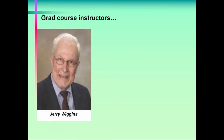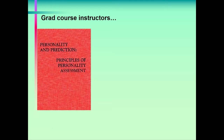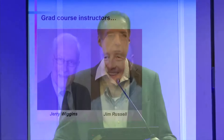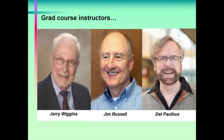I want to acknowledge some key intellectual influences and collaborators over the years. I went to graduate school at the University of British Columbia, where I was fortunate to have key figures in the personality assessment and research area, especially Jerry Wiggins. He wrote a very influential book published in 1973 called Personality and Prediction — if you haven't read it, I'd really encourage you to. Wiggins was influenced by Timothy Leary's 1957 book The Interpersonal Diagnosis of Personality. Some of you may know Leary as a guru of the 60s, but he was actually a very accomplished personality researcher. In addition to Wiggins, Jim Russell and Del Paulus were also there at the time.